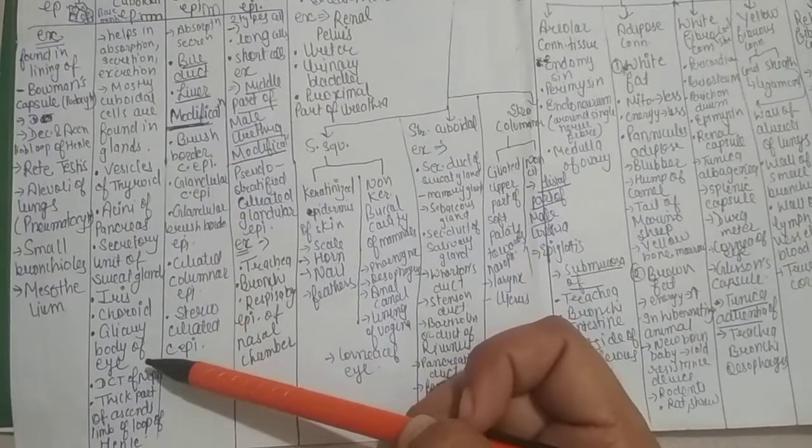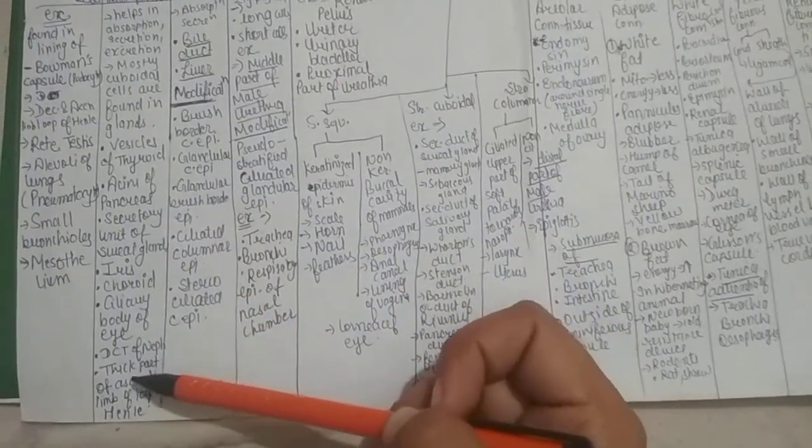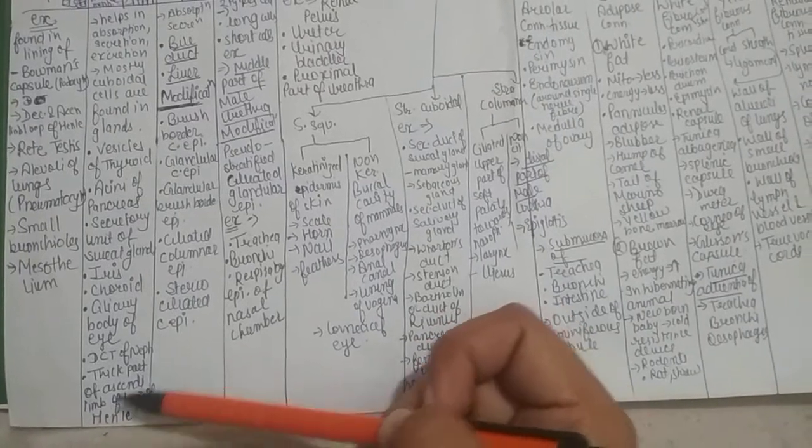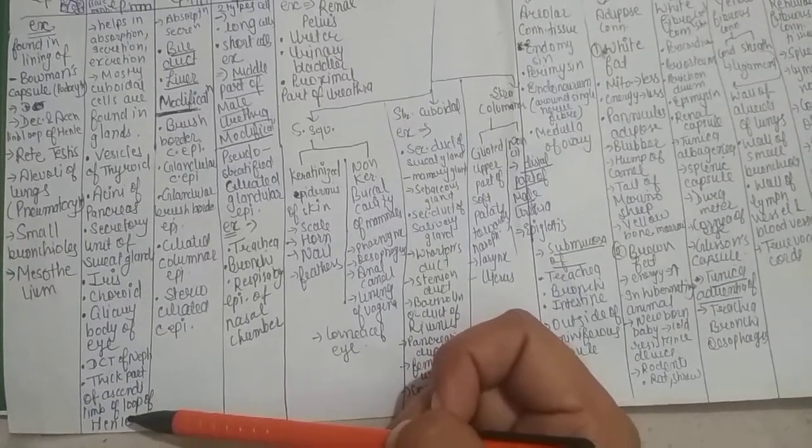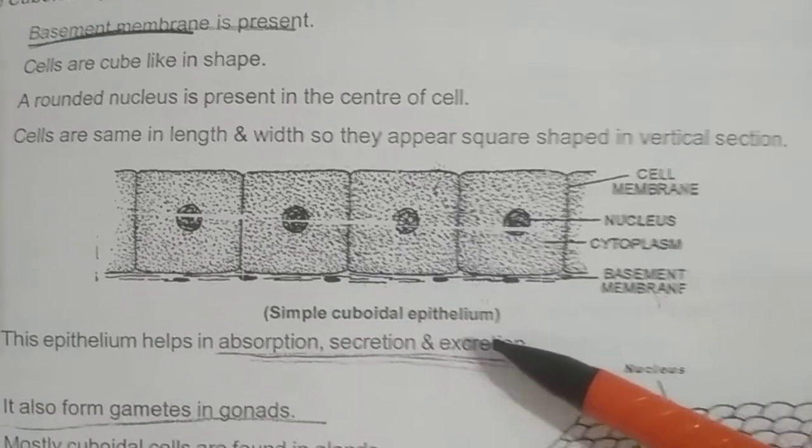Also in iris, choroid, ciliary body of eyes, DCT of nephron, and thick part of ascending limb of loop of Henle. This is the structure of simple cuboidal epithelium.